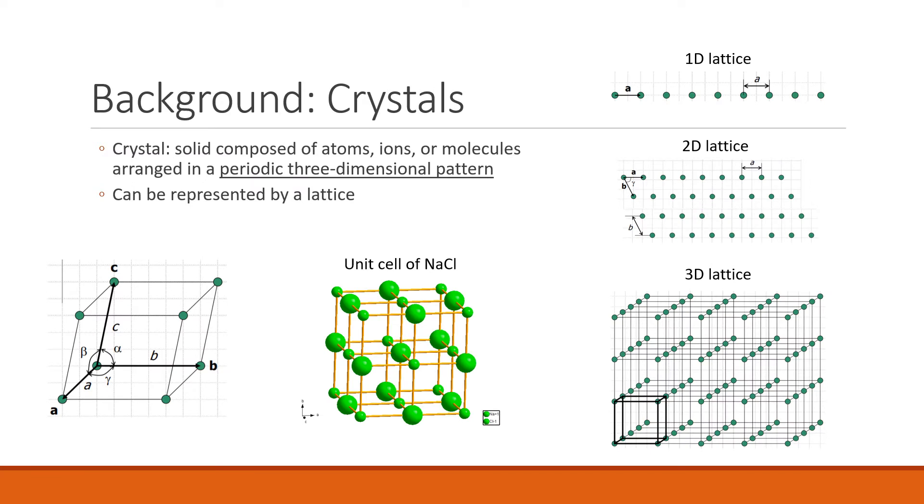So now I'll talk a little about crystals. Crystals can be defined as solids composed of atoms, ions, or molecules arranged in a periodic three-dimensional pattern. This means that crystals can be mathematically represented by lattices. You can see examples of lattices here in all three dimensions. The lattice is just an infinite array of points in which each point is an identical environment to all the others.